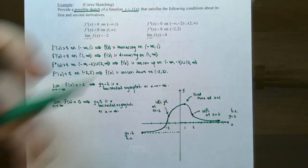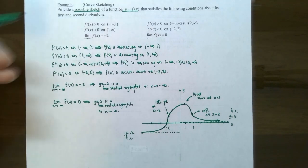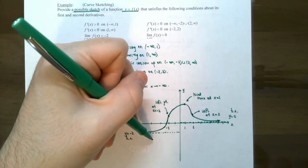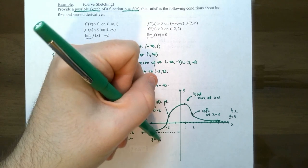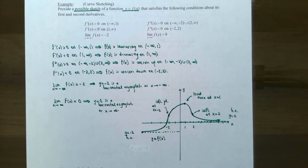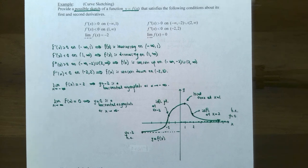This is one possible sketch of y equals f of x — this is curve sketching, using nothing but the first and second derivatives to indicate where the graph is increasing, decreasing, concave up, and concave down. If you have any questions about curve sketching or while working on the homework, please let me know. I'll see you in the next video. Thank you.